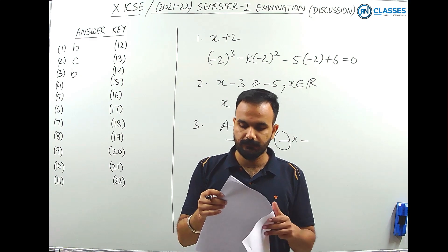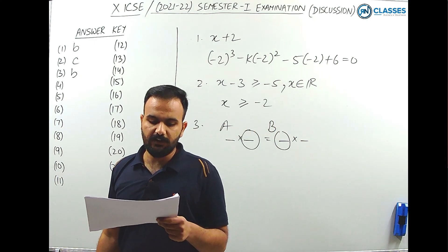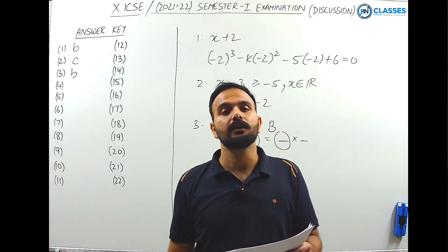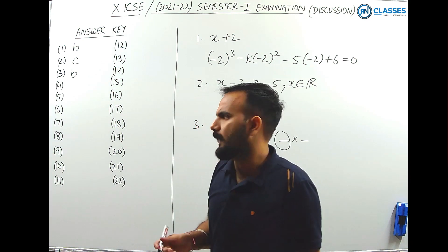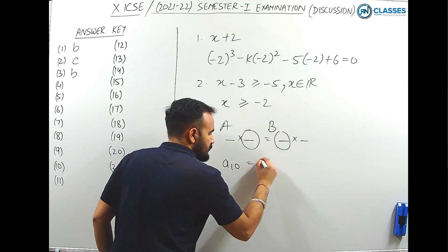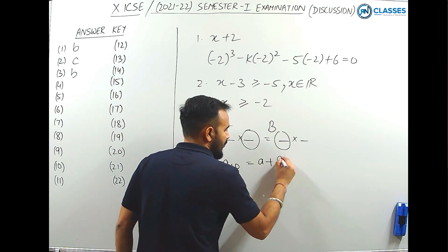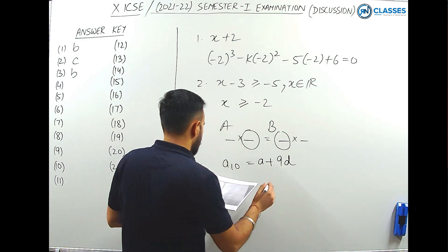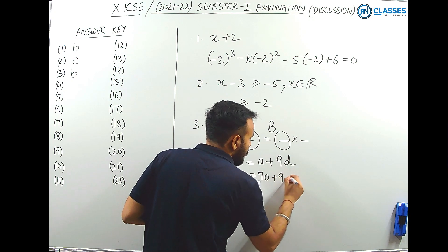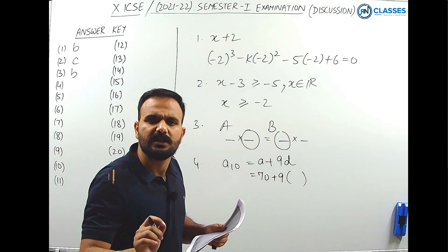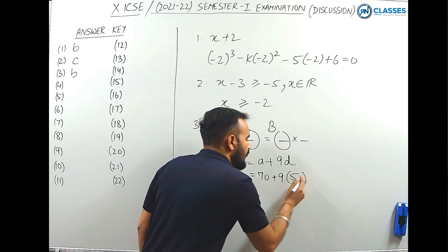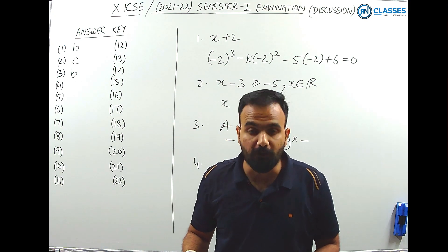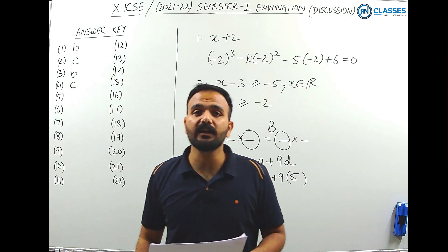Question 4: if 70, 75, 80, and 85 are the first four terms of an AP, find the tenth term. The tenth term = first term + 9 × common difference. First term is 70, common difference = 75 - 70 = 5. So the tenth term = 70 + 9×5 = 115. Option D is the correct answer.